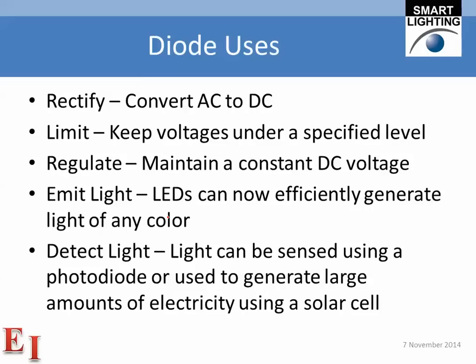Diodes can also regulate — maintaining a constant DC voltage. The Zener effect is used to create Zener diodes that maintain a constant voltage; the ones we'll be looking at will have a Zener voltage in the four to five volt range. Diodes made from materials besides silicon can emit light — we can effectively generate light of any color using an LED. We can also detect light using a photodiode, or use a solar cell to generate electricity. A solar cell is basically a PN junction diode.